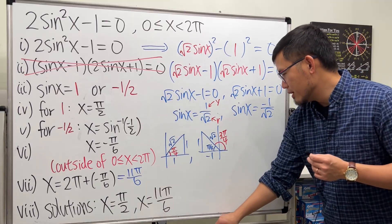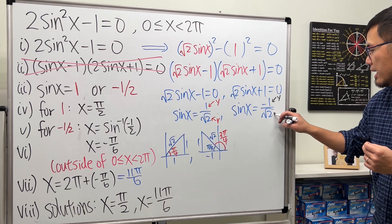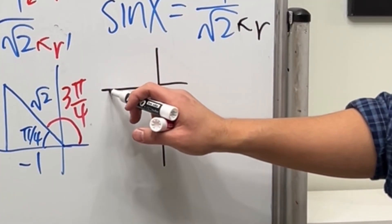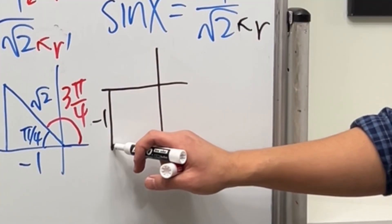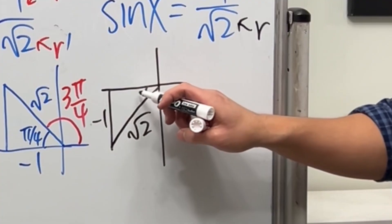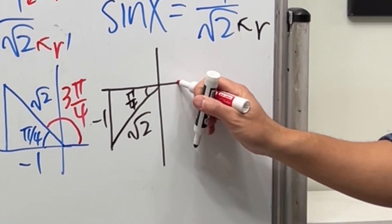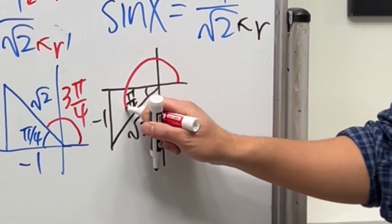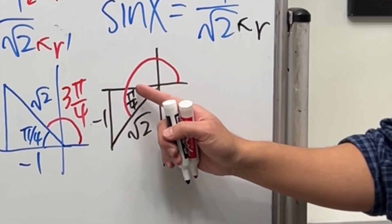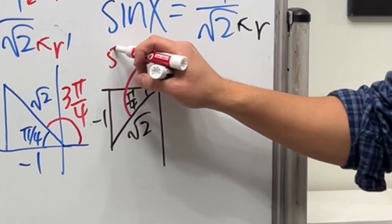For sine x equals negative 1 over square root of 2, we construct a reference triangle with y equal to negative 1 and r equal to square root of 2. The reference angle is still π over 4. Measuring the angle from the positive x-axis going into the third quadrant: π plus π over 4 equals 5π over 4. That's the third answer.